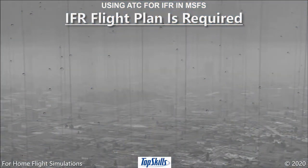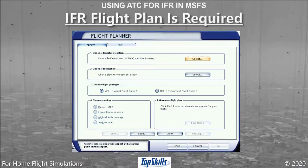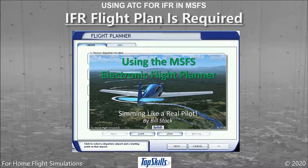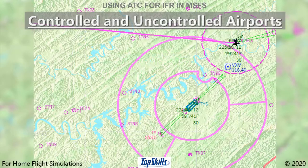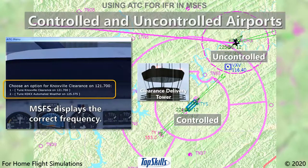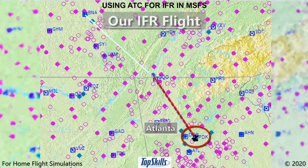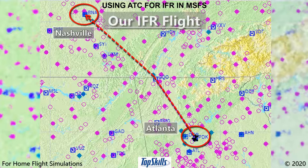To simulate air traffic control for instrument flight rules in Microsoft Flight Simulator, an IFR flight plan is required. ATC does not know what to do about your flight without your filed flight plan. Flight plans are made and filed through the Electronic Flight Planner. To begin an IFR flight from a controlled airport, pilots contact clearance delivery or the tower. This video will take you on an IFR flight from Peachtree DeKalb Airport in Atlanta, Georgia, to Nashville International Airport in Nashville, Tennessee. Both are controlled airports.